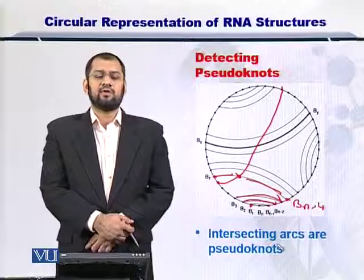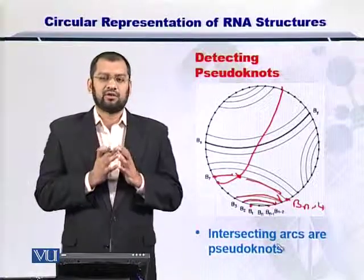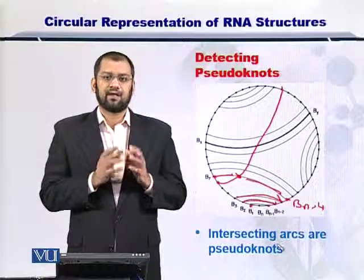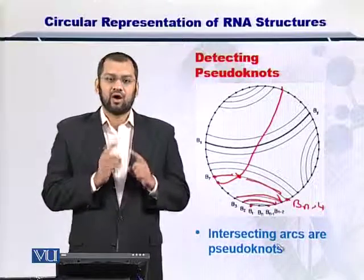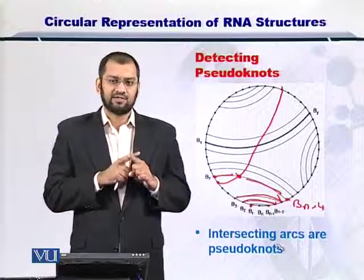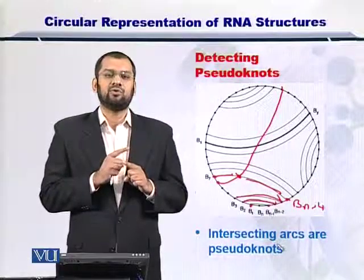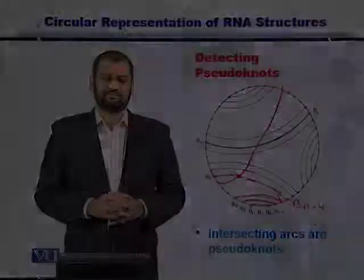So, dear students, if you construct the circular diagram for an RNA secondary structure and if you see two arcs that are intersecting each other, then you can call it as a pseudoknot. For a while, I have used a 1-2...